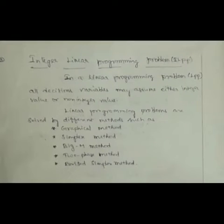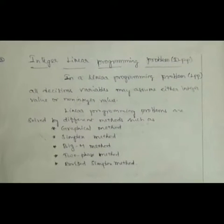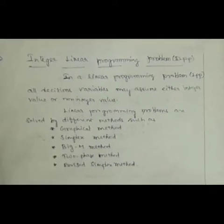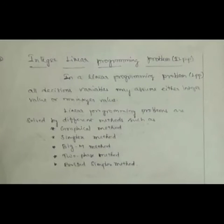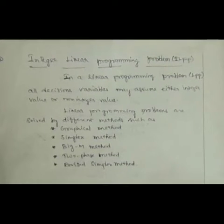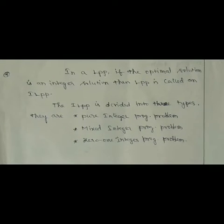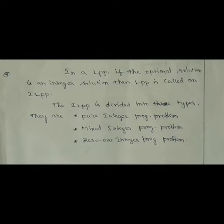The title is Solving Integer Linear Programming Problem. We know that in a linear programming problem, all decision variables may assume either integer value or non-integer value. Linear Programming Problems are solved by different methods such as Graphical Method, Simplex Method, Big-M Method, Two-Phase Method, Dual Simplex Method and Revised Simplex Method. In a linear programming problem, if the optimal solution is an integer solution, then it is called an integer linear programming problem. The integer linear programming problem is divided into three types: Pure Integer Programming Problem, Mixed Integer Programming Problem, and 0-1 Integer Programming Problem.